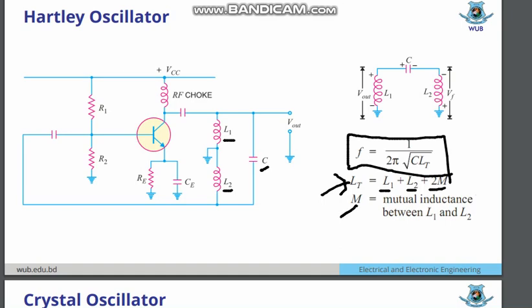LT means L1 plus L2 plus 2M, where 2M is the mutual inductance. Whenever we add two inductors in series connection, that will be the addition of the inductances plus the mutual inductance. That means L1 times L2 is the mutual inductance M, so the equation will be L1 plus L2 plus 2M equals LT, the total inductance.